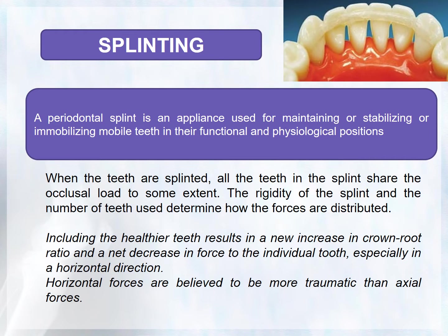Coming to splinting — what is a periodontal splint? It is an appliance used for maintaining, stabilizing, or immobilizing mobile teeth in their functional and physiological positions. Splinting stabilizes the teeth as a unit, which includes healthy teeth, and redirects forces from individual teeth to the unit as a whole dentition.